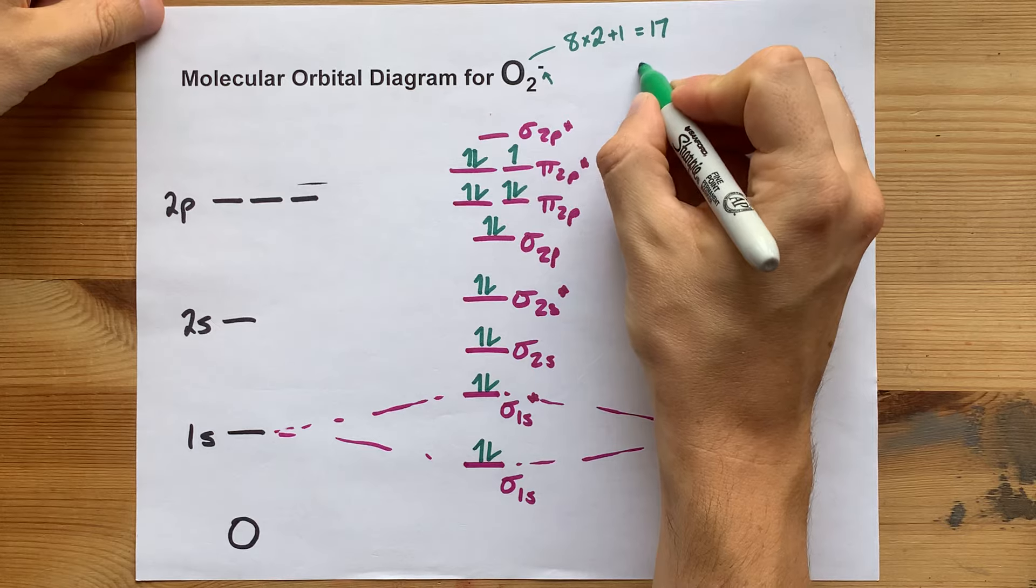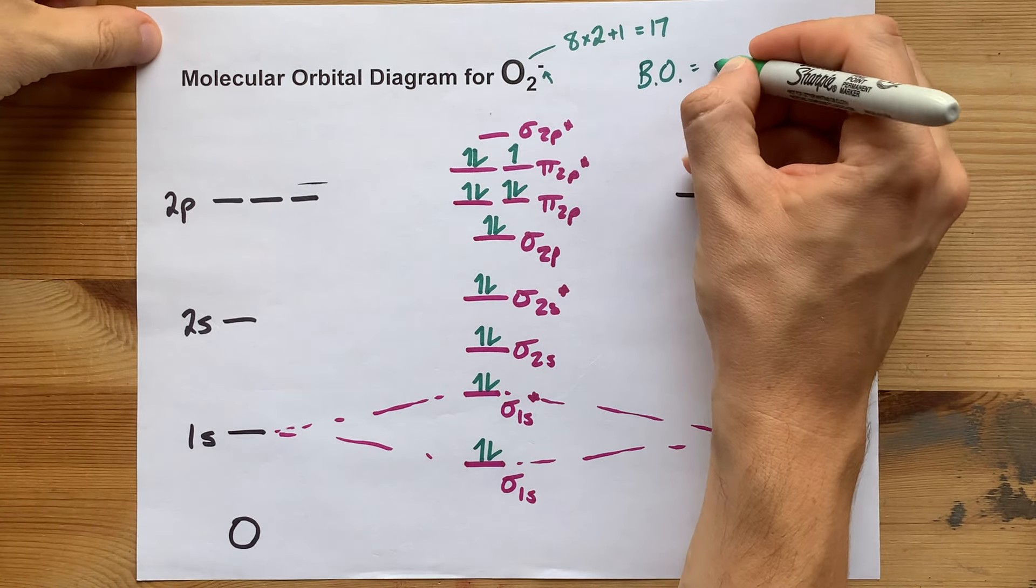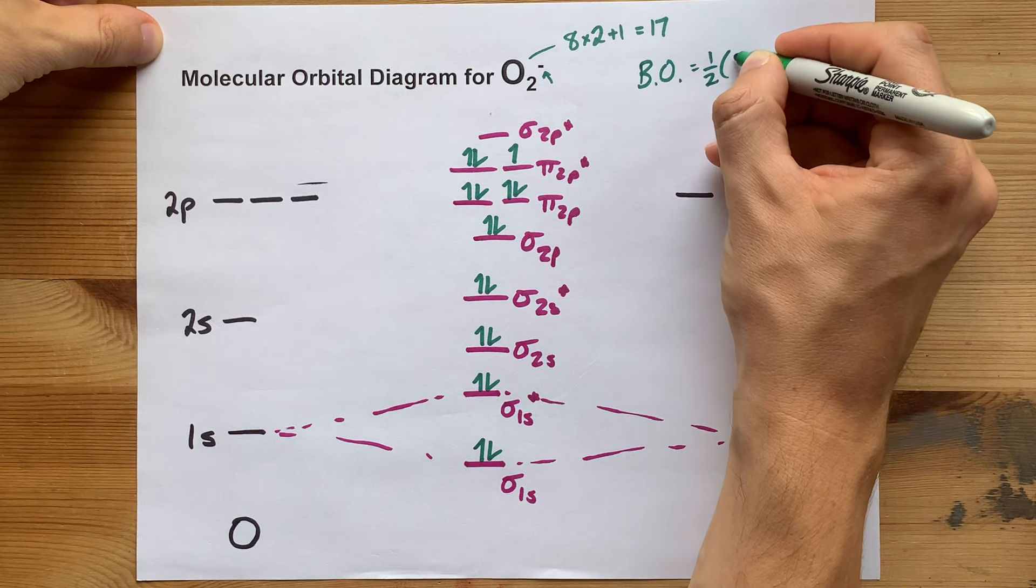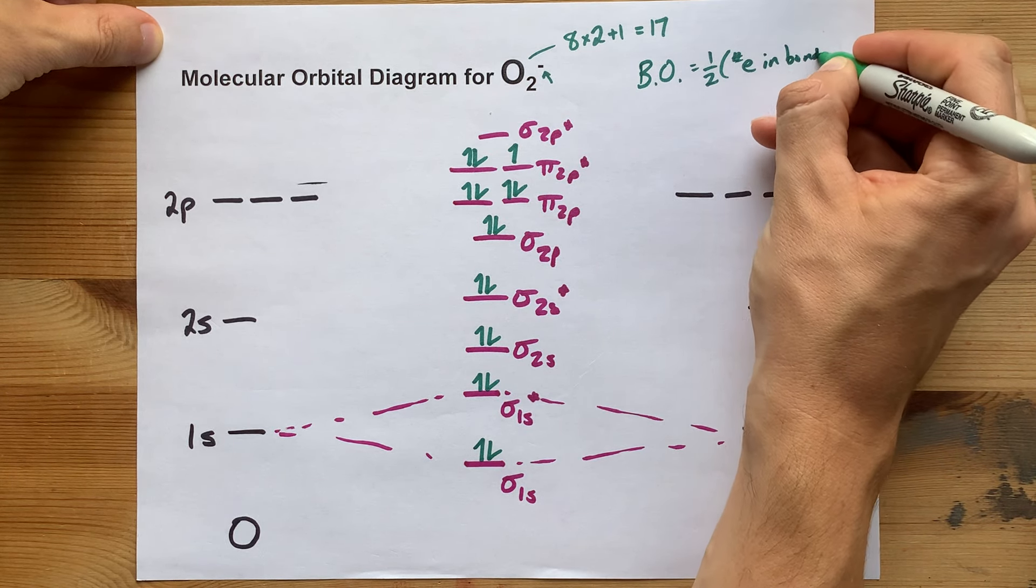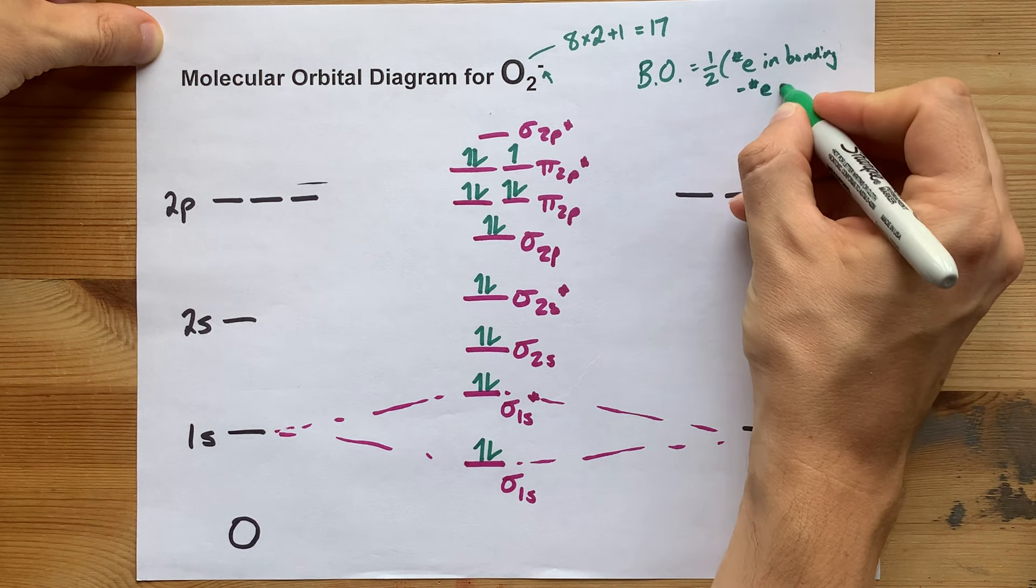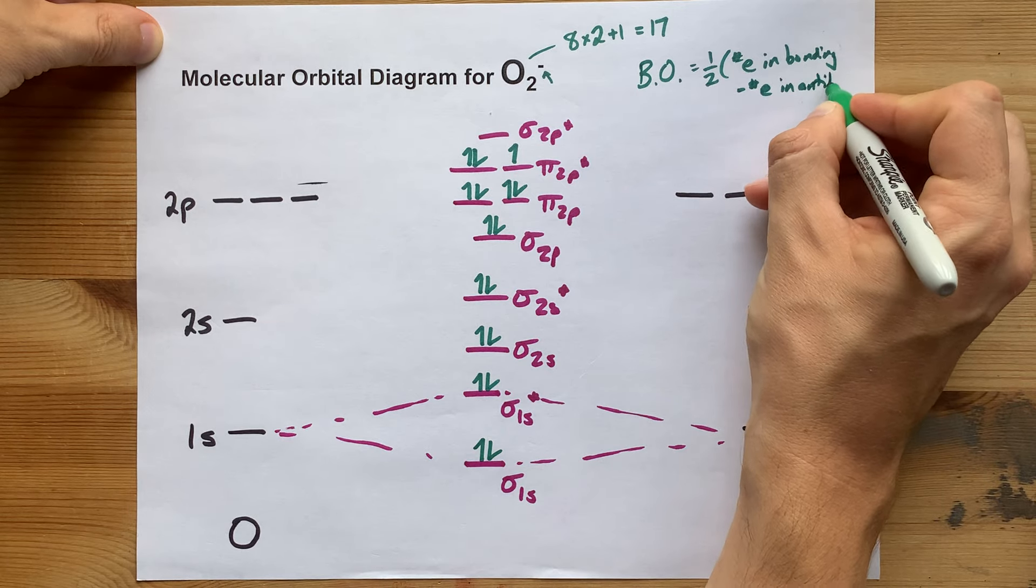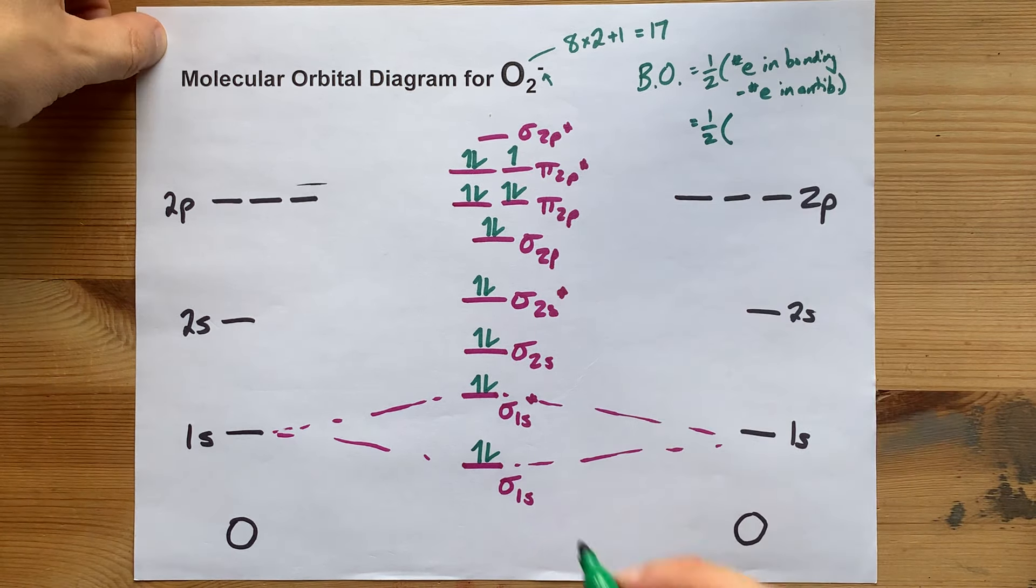Now, your teacher might be asking you for the bond order of this, which is one half of the number of electrons in bonding orbitals, that's non-asterisked, minus the number of electrons in anti-bonding orbitals. So in this case, let's count.